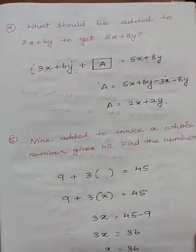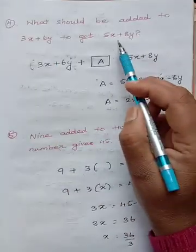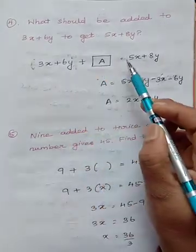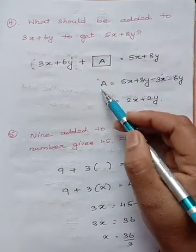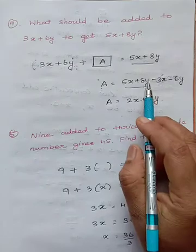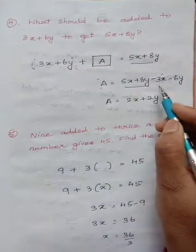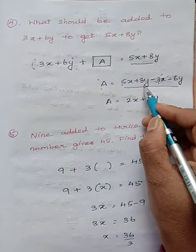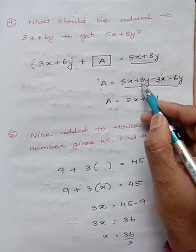Fourth question: what should be added to 3x plus 6y to get 5x plus 8y? Some number should be added to 3x plus 6y to get 5x plus 8y. We don't know the value, so let us write it as 'a'. So a plus 3x plus 6y equals 5x plus 8y. When 3x is taken to the other side it becomes minus 3x, and 6y becomes minus 6y. Solving the like terms: 5x minus 3x equals 2x, and 8y minus 6y equals 2y. So a equals 2x plus 2y.